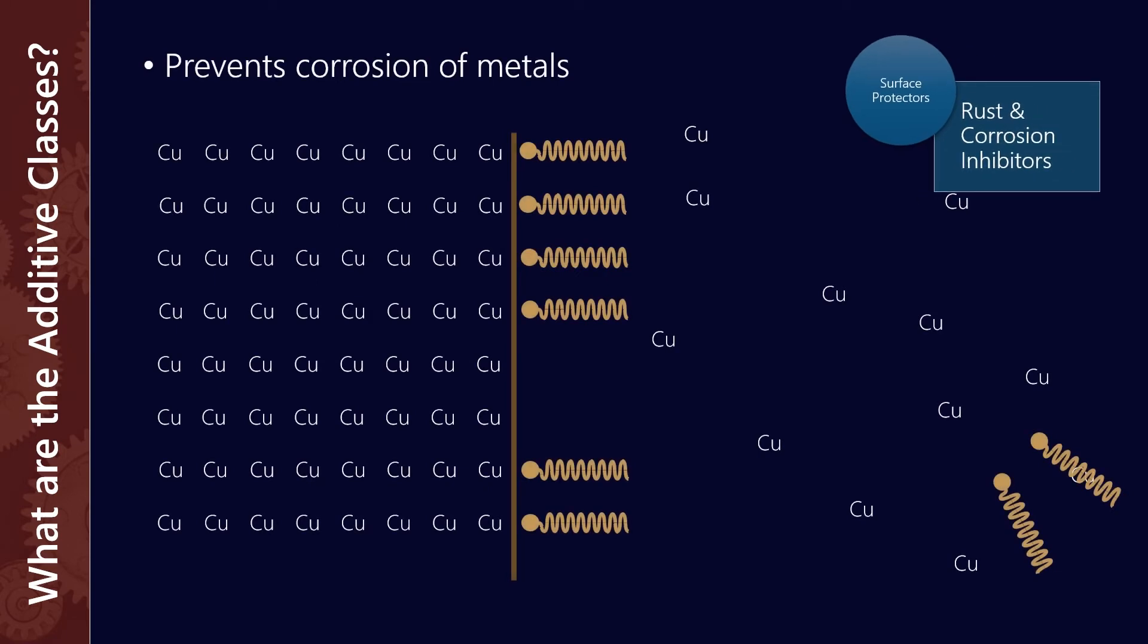Moving on to surface protectors. With rust and corrosion inhibitors, we're trying to limit the surface area contact between the lubricant and the metal. In this case, we have surface-acting additives that can bond to the surface of the metal and prevent, for example, copper from oil coolers exchanging with lubricant and becoming sites that promote oxidation of the oil.